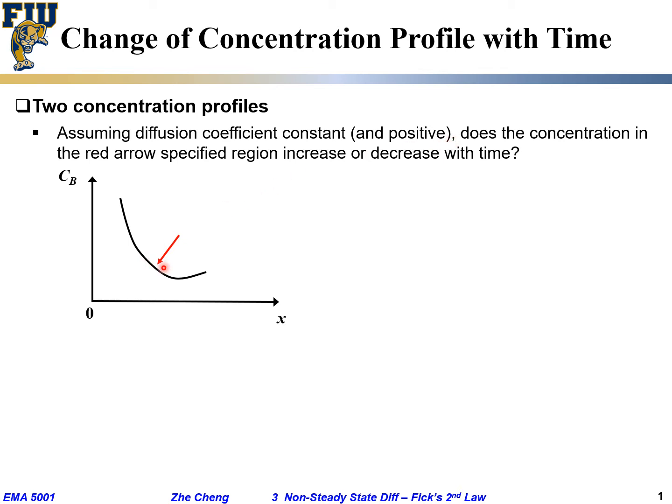Well, just by simplicity, where I'm pointing compared to here, is concentration lower or higher? Lower. So naturally when the diffusion coefficient is positive, the flux goes which way? Down towards the right side, which means the local concentration should increase, right? Make sense?